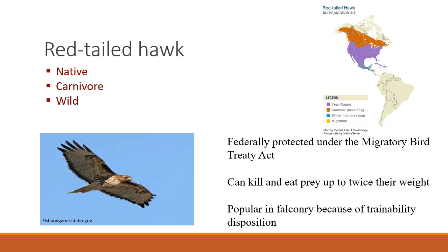Perhaps the most common bird flying on rangelands would be the red-tailed hawk. They're native, carnivores, and wild, and they are federally protected under the Migratory Bird Treaty Act because they fly from fairly high northern areas all the way south. They kill and eat prey up to twice their own weight, so they can have a profound impact on rodent and snake populations. They're also popular for use in falconry — they can be tamed and trained.